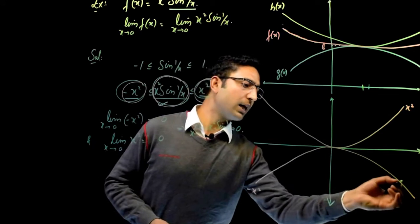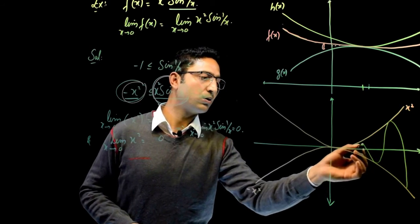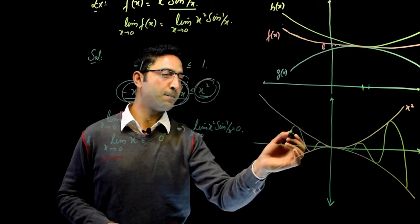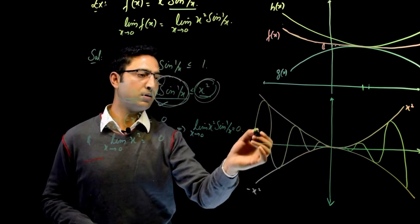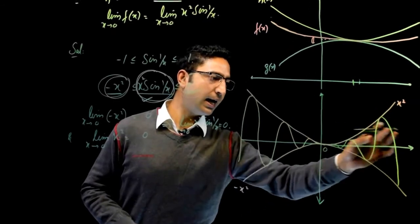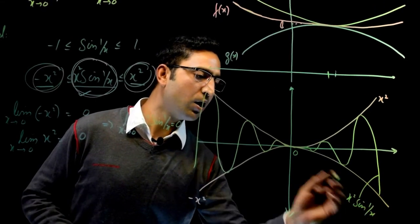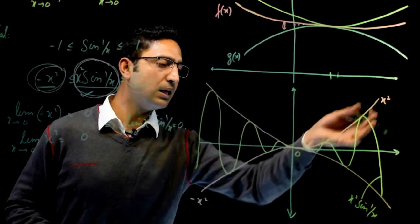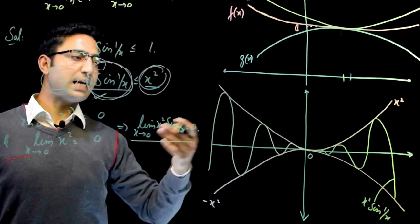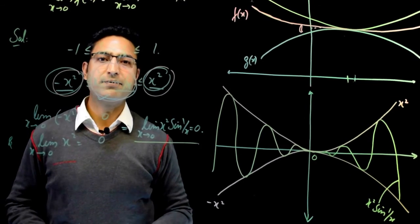Now, this x squared sine of 1 by x has to lie between this x squared and this minus x squared. At the point 0 there is a pinch. This x squared, minus x squared, and the graph x squared sine of 1 by x all are pinched together such that the limit of all at point 0 is equal to 0. We can do many other examples with the help of the Sandwich Theorem. We shall discuss more examples in the future videos.